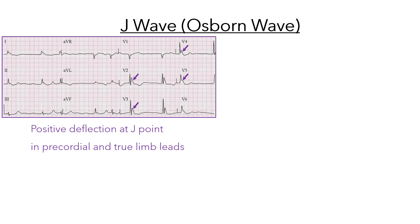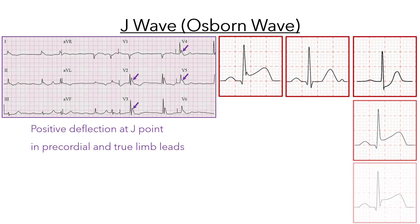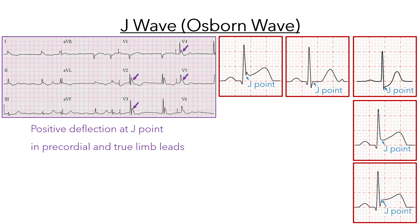The letter J on the ECG defines two totally different and unrelated events. The J point is a point in time marking the end of the QRS and the onset of the ST segment, present on all ECGs. The J wave is a much less common,